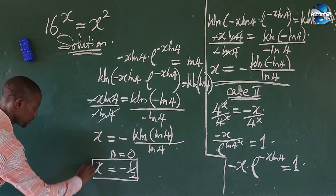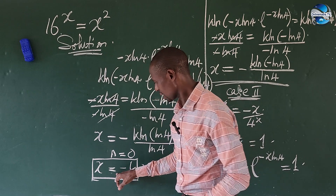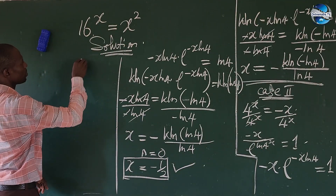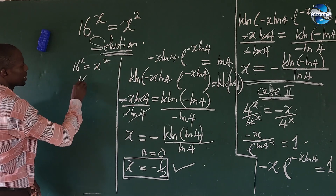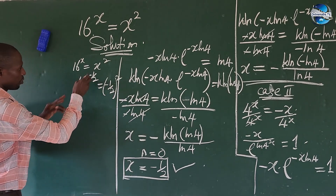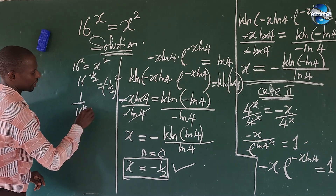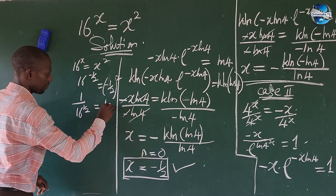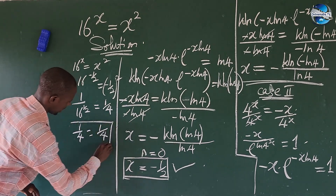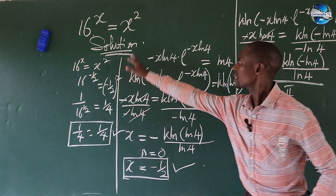Let's run a check to verify that x equals minus 1 over 2 satisfies the original equation. We substitute into 16^x equals x squared: 16 to the power of minus 1 over 2 equals (minus 1 over 2) squared. Using the law of indices, the left side becomes 1 over 16 to the power of 1 over 2, which equals 1 over 4. The right side: (minus 1 over 2) squared equals 1 over 4. So 1 over 4 equals 1 over 4, confirming that x equals minus 1 over 2 as the only real root satisfies the original equation.